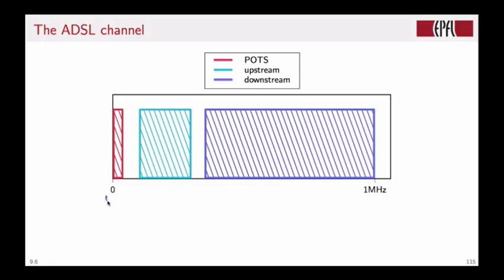The first one is the part reserved to the telephone conversation. This is a baseband part of the channel up to about 4 kHz. Then we have a region that is devoted to the upstream part of the data communication, the data that you send up to the internet, and then a downstream part that is much larger that is used for data download. This asymmetry between upstream and downstream is actually the reason why the communication protocol is called ADSL. ADSL stands for Asymmetric Digital Subscriber Line.